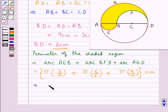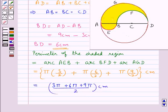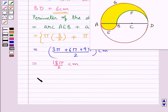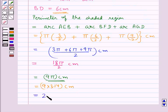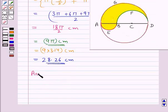So the total perimeter of the shaded region equals (3π + 6π + 9π) / 2, which is 18π/2, equal to 9π cm. Taking pi equal to 3.14, this gives 28.26 cm as the perimeter of the shaded region.